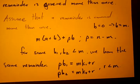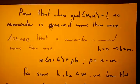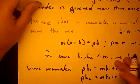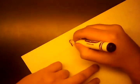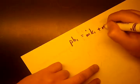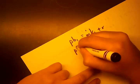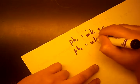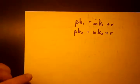Now we're going to go ahead and see why this causes a problem. Let's copy this down. P times B1 equals M times some K1 plus R. And P times B2 equals M times K2 plus R.